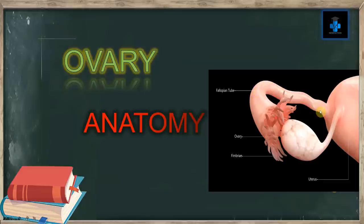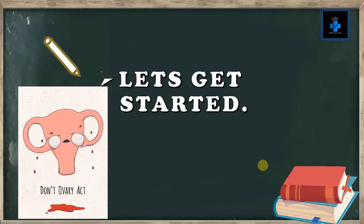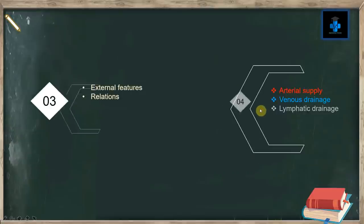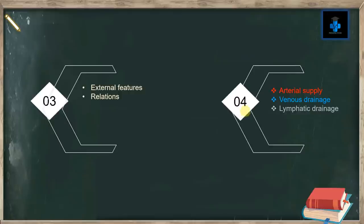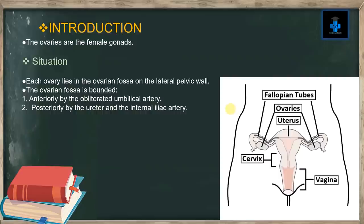This is how an ovary looks like. This right here is a fallopian tube and this here is the fimbriae. In this video I will be enumerating an introduction about the ovary, the situation and position in the human body, external features and relations, arterial supply, venous drainage, lymphatic drainage, nerve supply, functions, histology, and some important clinical anatomy. Introduction: the ovaries are the female gonads.